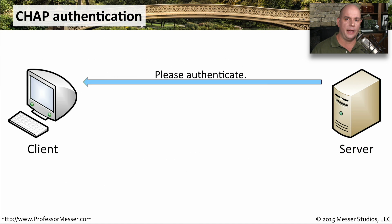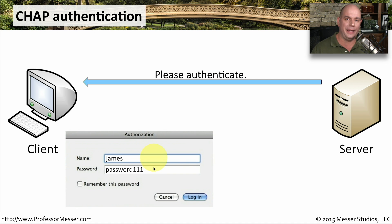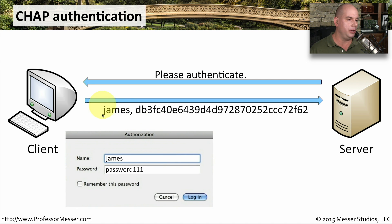Here's how CHAP authentication works visually. As you connect to a service from your client device, the server asks for authentication — this is the challenge. Your client gets a pop-up to enter a username and password. Instead of sending that password in the clear, CHAP encrypts it. The username is sent in plain text, but the password is sent as a hash across the network. This is a one-way hash, so you cannot determine the original password from it.